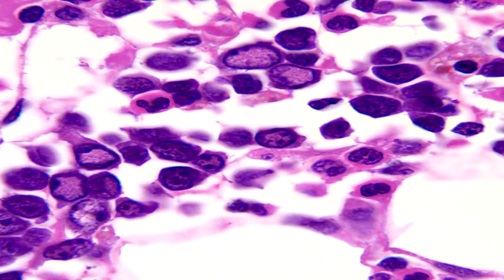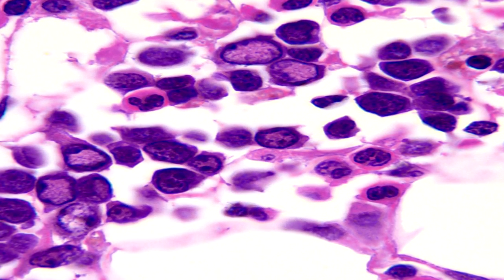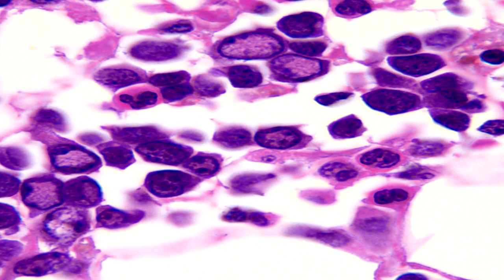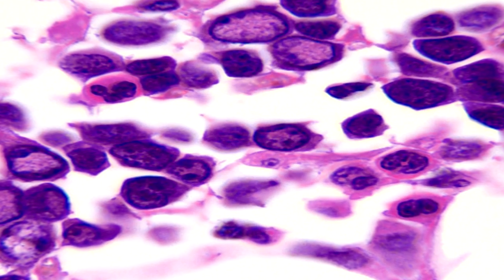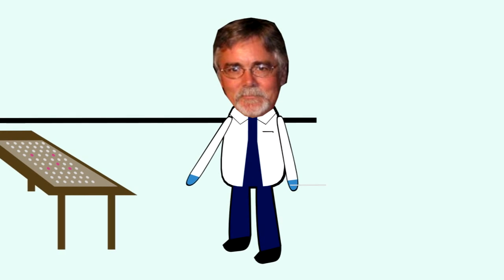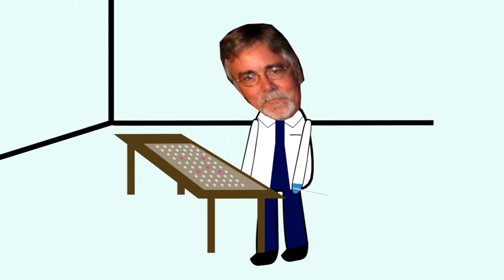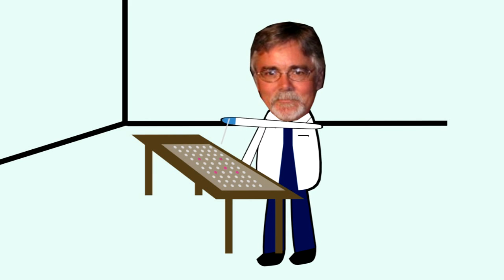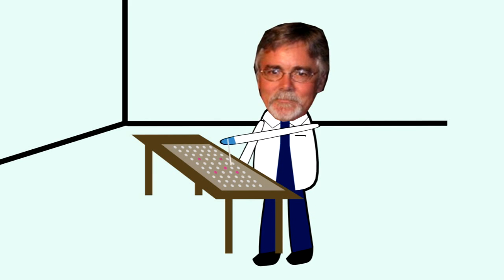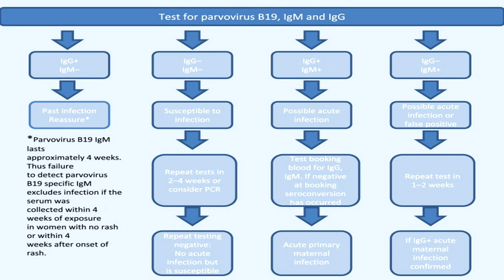The identification of parvovirus inclusions in marrow biopsies and the confirmation of infection by in-situ hybridization is important in assessing anemia in immunodeficient patients. Screening patients for their B19 antibody status will identify a patient at risk. If IgM is detected, the result shows a recent infection. If IgG is present, immunity is indicated. If both IgG and IgM antibodies are absent, you are at risk of becoming infected.